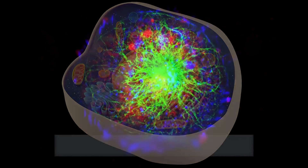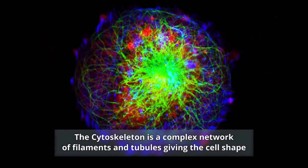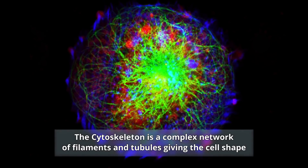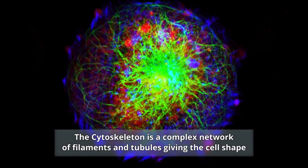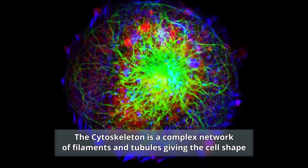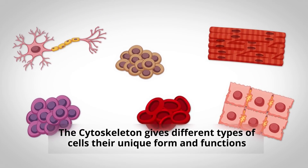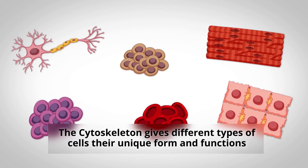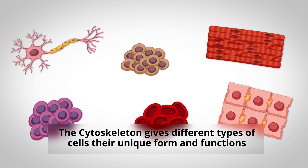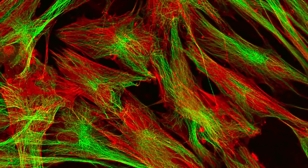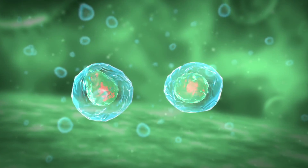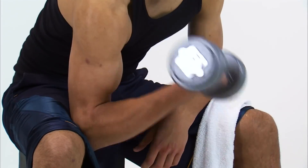Extending throughout the cytoplasm is the cytoskeleton, a complex network of interlinking filaments and tubules. The cytoskeleton is what gives the cell its shape and can be very different depending on the organism and cell type. The cytoskeleton can contract and change shapes, playing a key role in everything from cellular migration and division to muscle contraction.